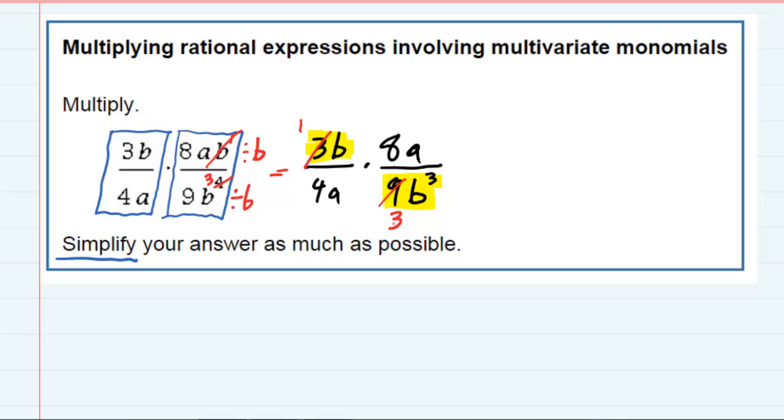And then for the B's, I've got 1B in the top and 3B's in the bottom. This 1B is going to cancel one of those B's, leaving me with just two of them. And then I'm going to look on the other diagonal to see if there's anything that I can cross cancel here.